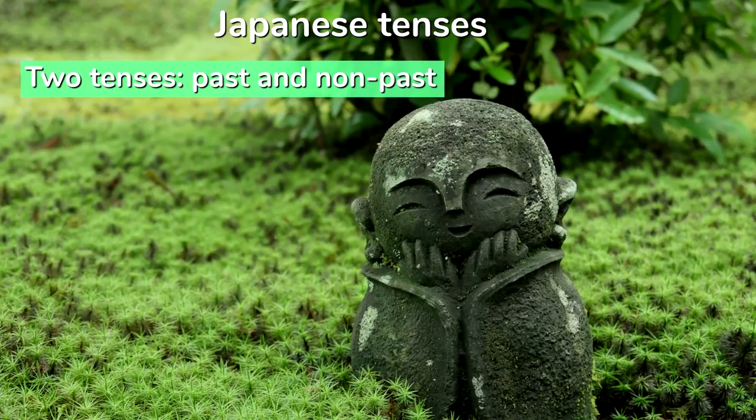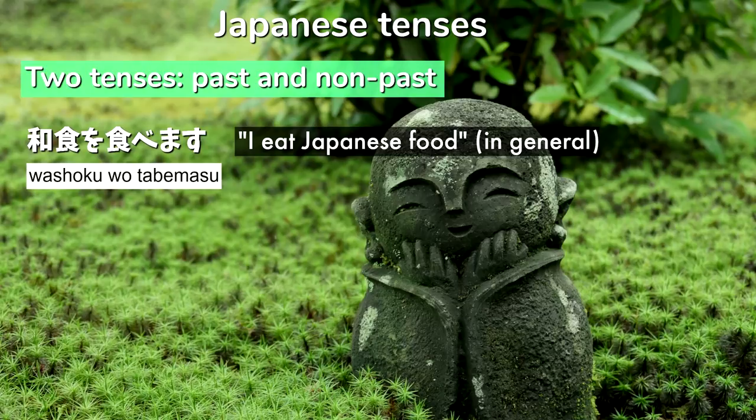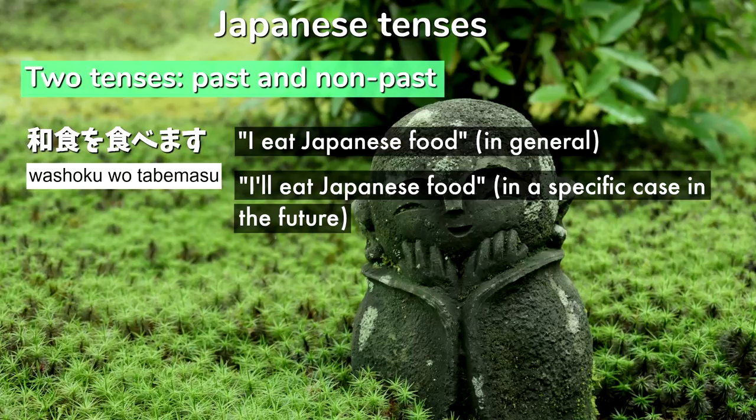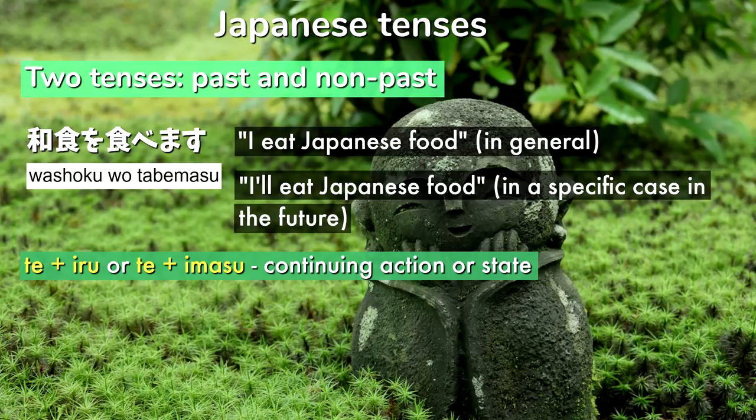Could mean I eat Japanese food, in the general sense, or I'll eat Japanese food, in a specific case in the future. It's normally not hard to tell the difference based on context. And there's another form, te iru or te imasu, which represents a continuing action or continuing state, incorporating uses of both progressive as well as perfect aspect.